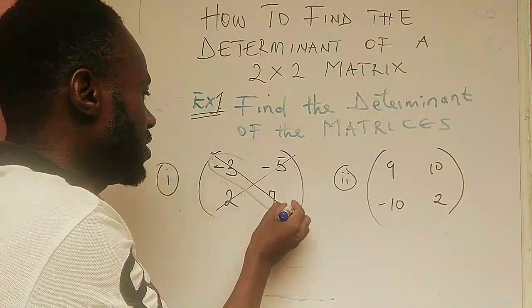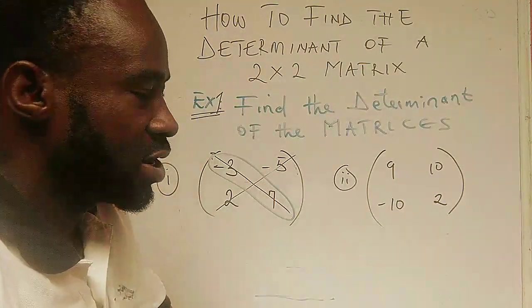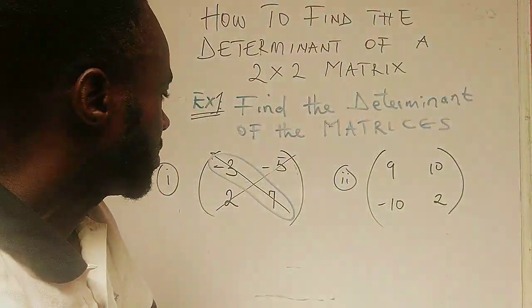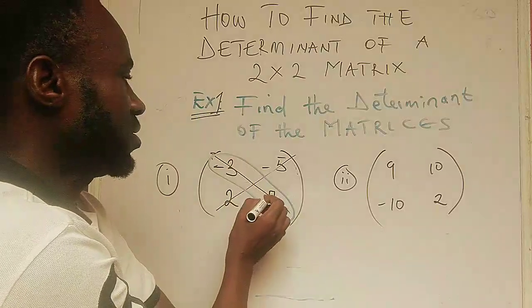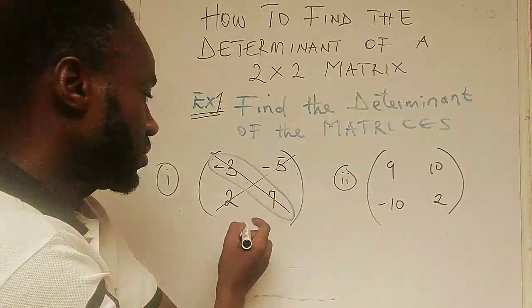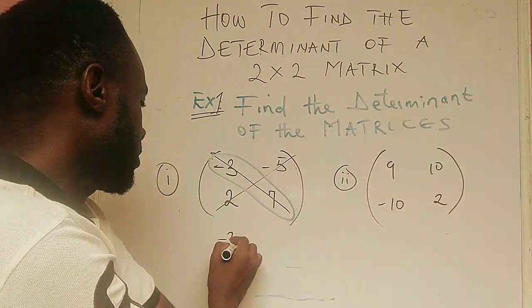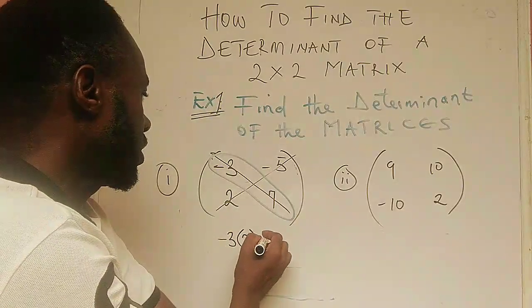This -3 and this 7 is our major diagonal. We are going to multiply them together. So, -3 times 7, that will give us -21.